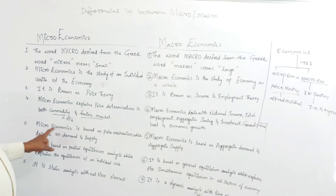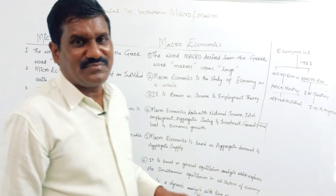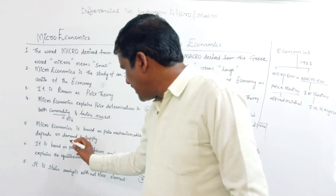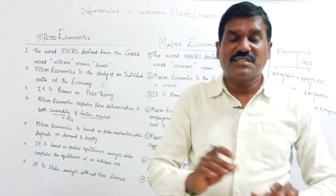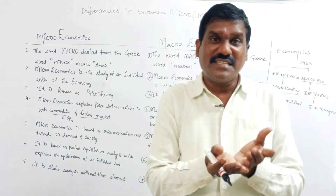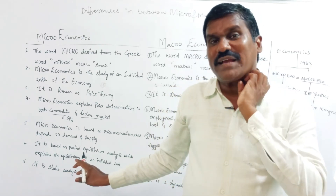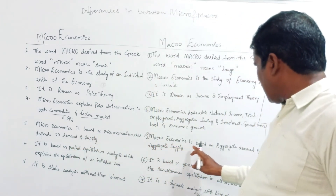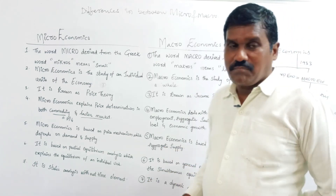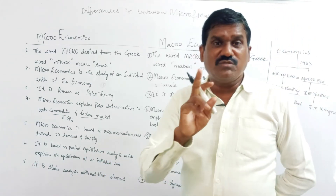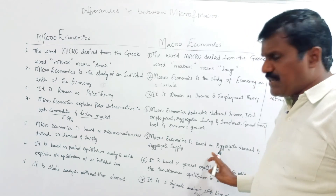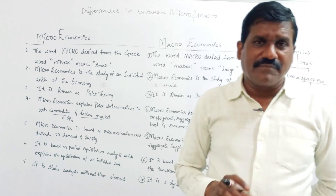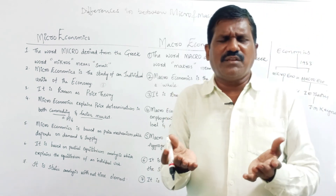Microeconomics is based on the price mechanism, which depends upon demand and supply — how price is determined on the basis of demand and supply. Macroeconomics is based on aggregate demand and aggregate supply. Here, 'aggregate' means total — aggregate demand, aggregate supply, aggregate saving — all are complete totals.